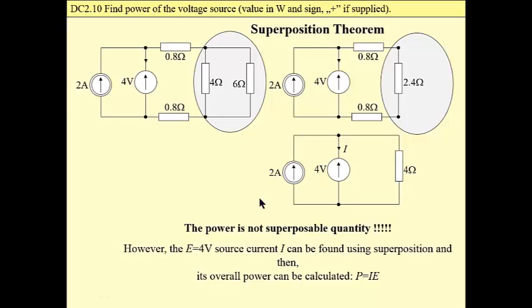Now superposition theorem. We have a circuit built of two sources, current and voltage source, connected in parallel and then in parallel with 4 ohm resistor. The power is not a superposable quantity. However, we may calculate currents and voltages by means of superposition. We may calculate this current using superposition, and then we may calculate overall power of this voltage source.